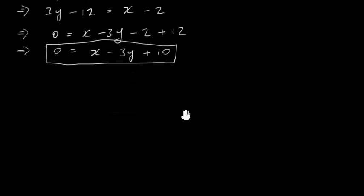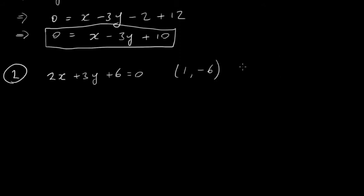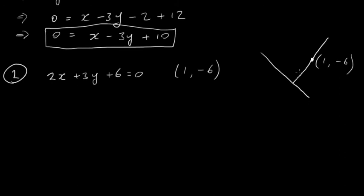That was example 1 — two parallel lines. Now let's look at perpendicular lines in example 2. We take the line 2x plus 3y plus 6 equals 0, and we want the equation of a line perpendicular to it passing through the point (1, minus 6). This new line meets the original at a right angle.